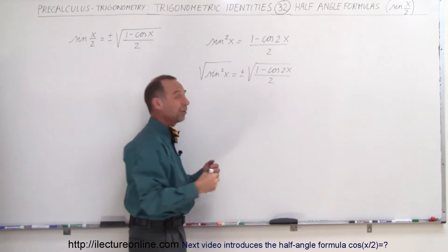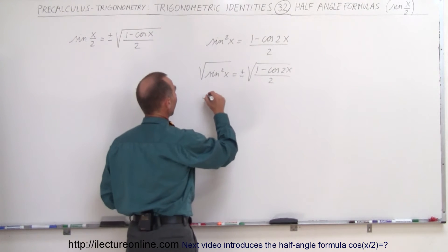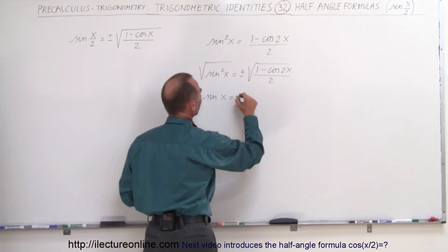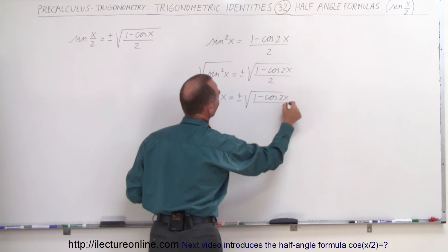Of course we use plus or minus because when you multiply two negative numbers you get a positive number again. And so that means that the sine of x therefore is equal to plus or minus the square root of 1 minus the cosine of 2x divided by 2.